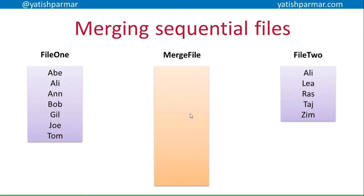Merging a sequential file is slightly more difficult. Remember that in a sequential file, the data is in order of a key field. I'm making a couple of assumptions here. First of all, I'm assuming that both files have the same key field. I'm also assuming that the same ordering method has been applied to both files — so the data in both key fields is ordered the same way.